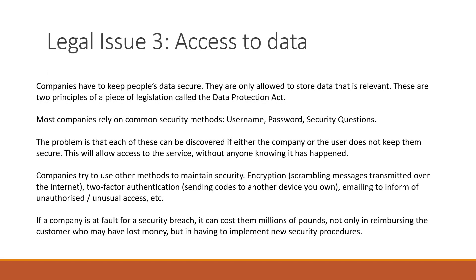The third and final legal issue we need to look at is access to data. Companies have an obligation to keep people's data secure and are only allowed to store data that is relevant. These are actually two principles of a piece of legislation called the Data Protection Act, which we will look at shortly. Most companies rely on common security methods such as usernames, passwords, and security questions to access their systems. The problem is that each of these can be discovered if either the company or the user does not keep them secure, allowing access to the service without anyone knowing.